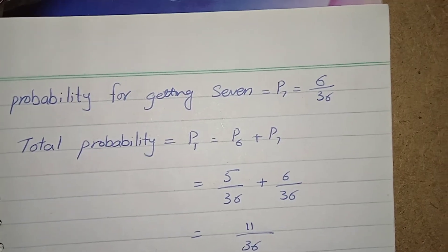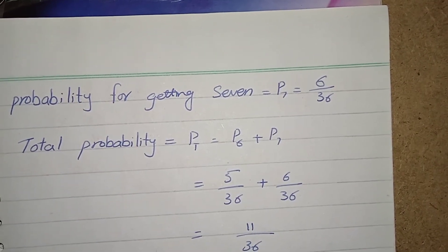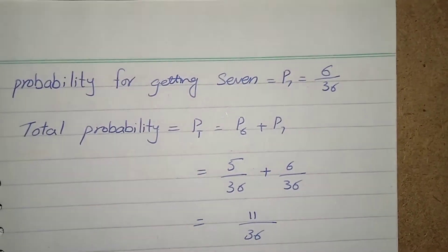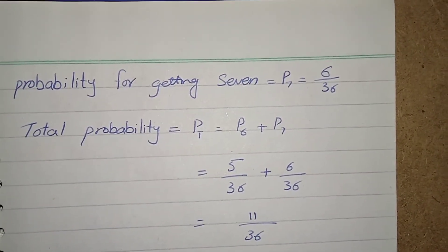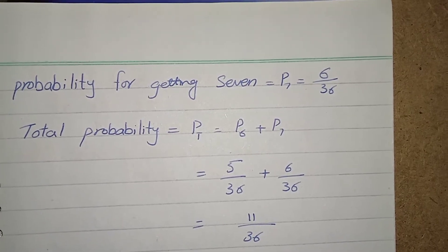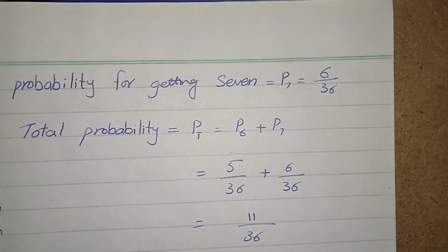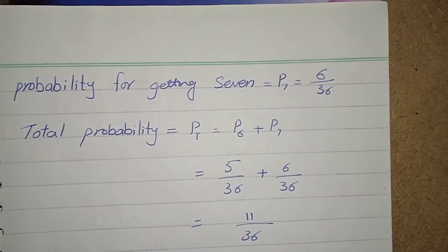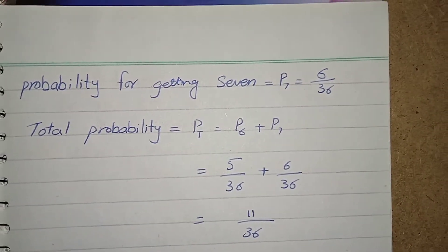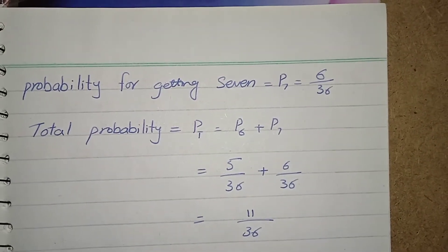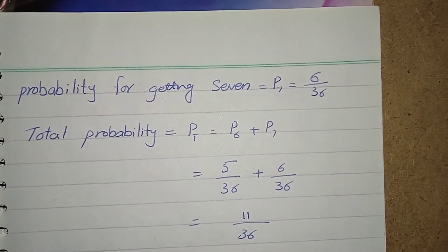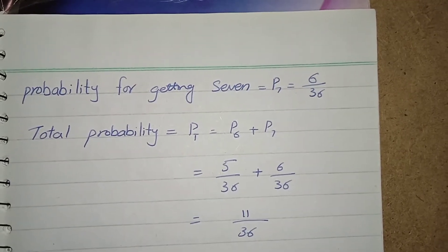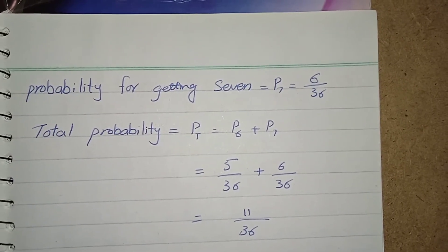Mutually exclusive are those events which cannot be possible at the same time. For example, in this case when you throw a dice either you will get 6 or 7. You cannot get 6 or 7 at the same time. Both these events at the same time are impossible. That's why these events are mutually exclusive. So to find the probability of mutually exclusive events you have to add them.